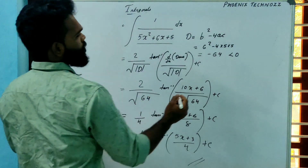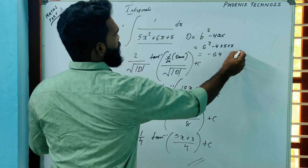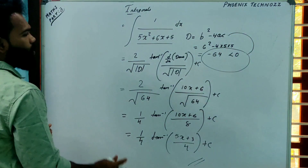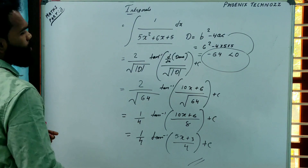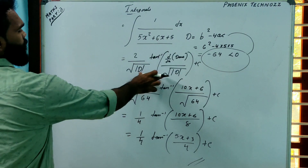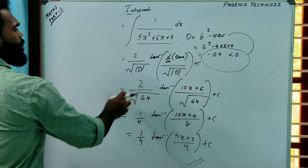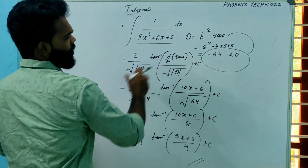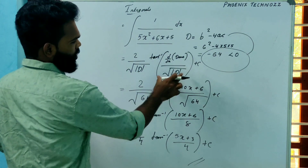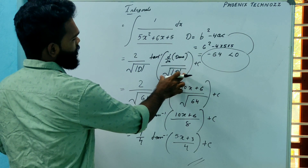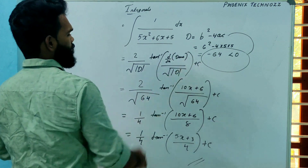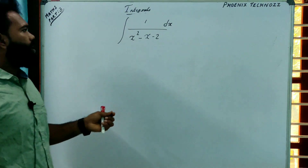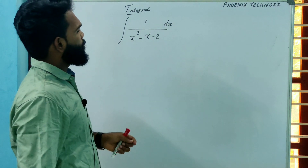The key to remember is: b²−4ac must be negative to apply this shortcut — 2 divided by the square root of the modulus of the discriminant, into tan inverse of the derivative of the denominator divided by the square root of the modulus of the discriminant, plus C. Now take another example: integral of 1/(x²−x−2) dx.